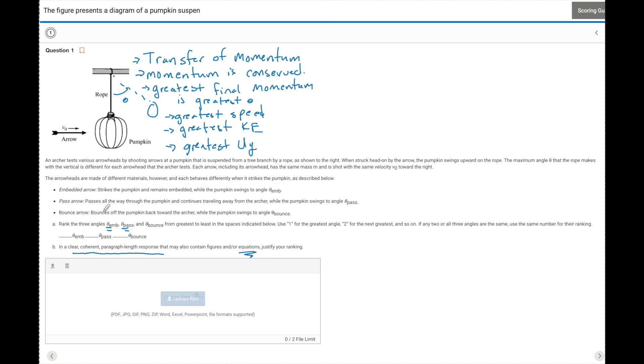So let's look at each one of these to prove which one is going to have the greatest final momentum. First, let's look at the embed. So in this equation, we have P before equals P after. That's the law of conservation of momentum. Now before, the pumpkin has zero momentum because it's not moving.